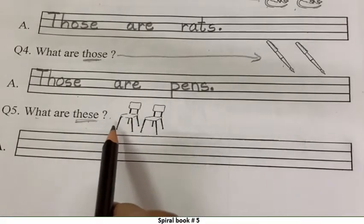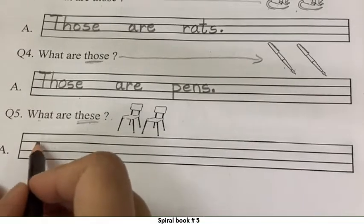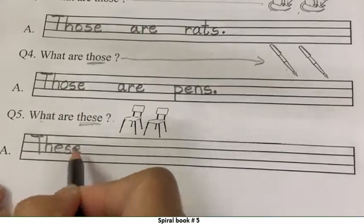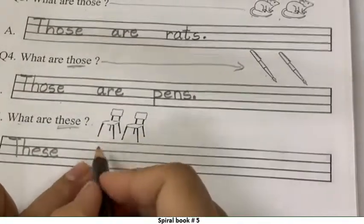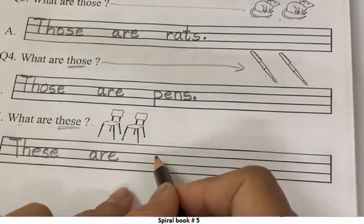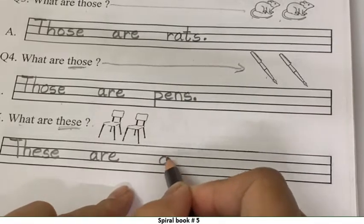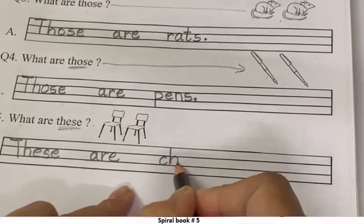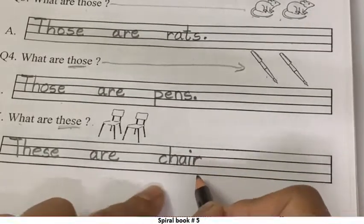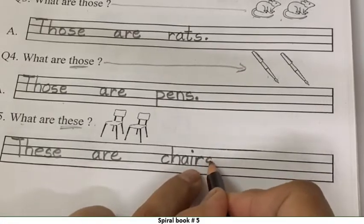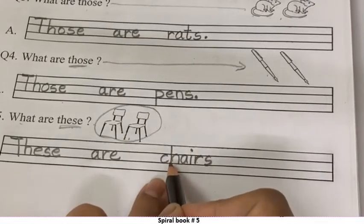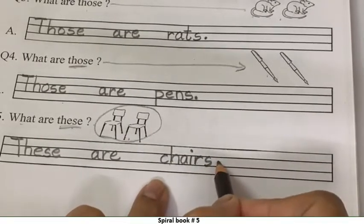Kya hai ye? Ye chairs hai. Come on. Let's write T, capital H, E, S, E. These. With one finger gap. Are. One finger gap. These are chairs. Now. Come on. C, H. Ch. A. I is? A. R. Right? And letter S because we have two chairs. C, H, A, I, R, S. Chairs. And then full stop.